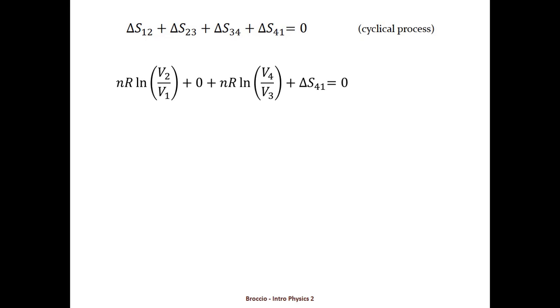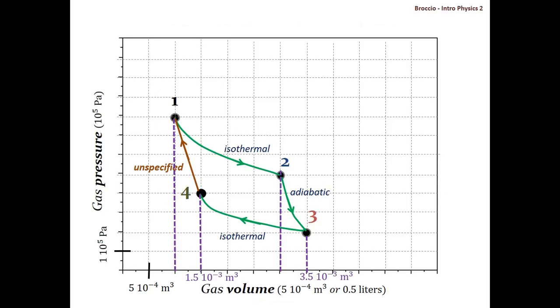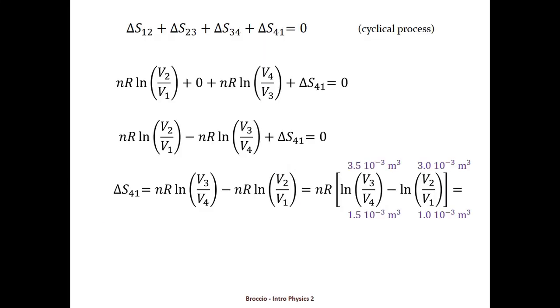So we get nR logarithm of V2 over V1 plus zero plus nR logarithm of V4 over V3. With a little bit of algebra we can solve for delta S41 and get nR times logarithm of V3 over V4 minus logarithm of V2 over V1. Reading out the values for the volumes V1, V2, V3, and V4 and substituting them, the answer is in fact negative: a decrease in entropy by 0.284 joules per kelvin.